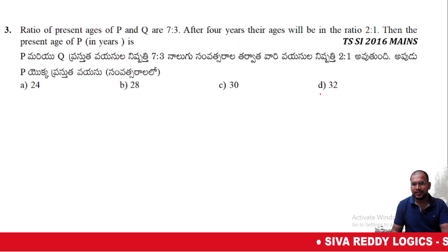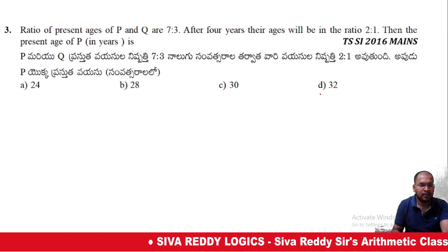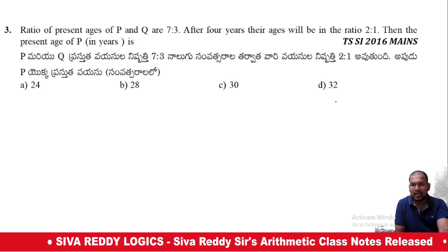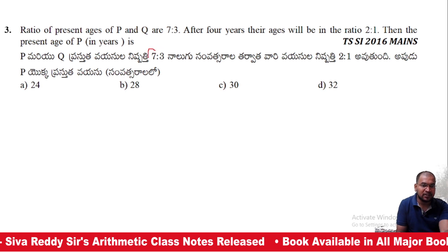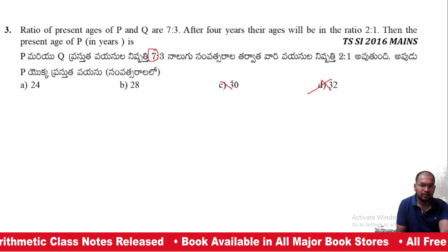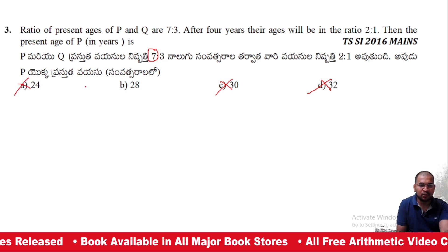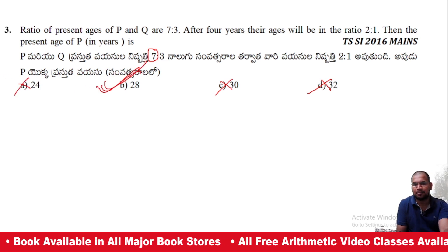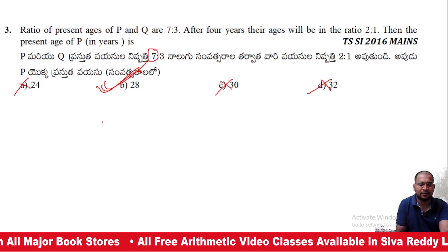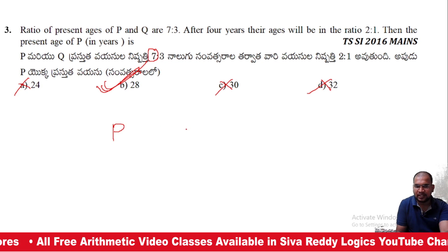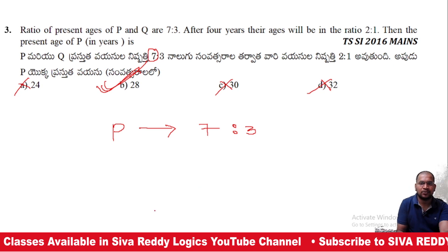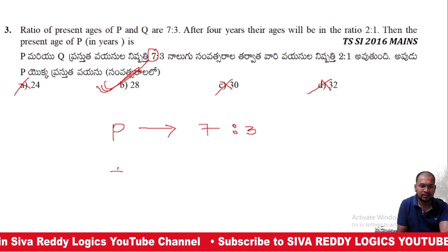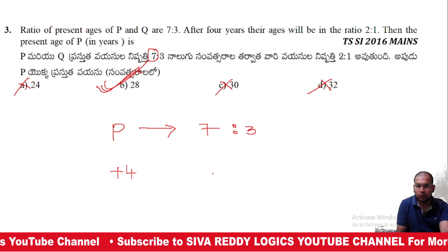The ratio of present ages of P and Q are 7 is to 3. After 4 years, the ratio will be 2 is to 1. Then the present age of P is what? The ratio is 7 is to 3; after 4 years it becomes 2 is to 1. The answer is option B.